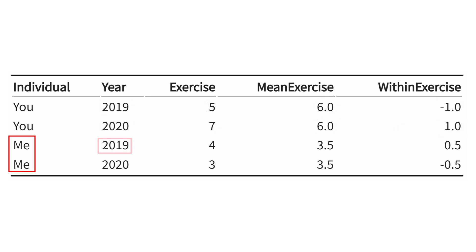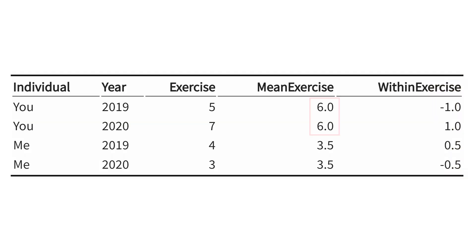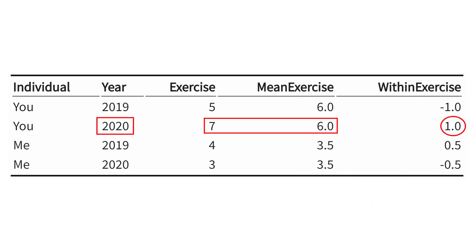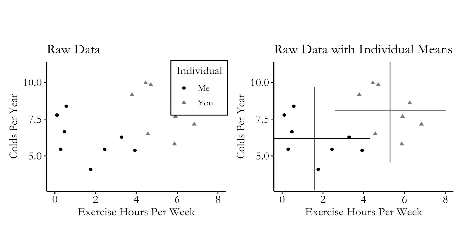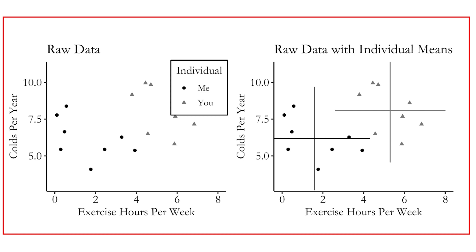Similarly, in 2019 I was half a point above my average and in 2020 half a point below. Fixed effects gets rid of the differences between us — we remove the gap between six and 3.5 — and only look at the within variation: in 2020 you exercised more than you typically did, and I exercised less than I typically did. We can look at this graphically as well: we have data across multiple years on both of us, measuring weekly exercise hours and number of colds per year.